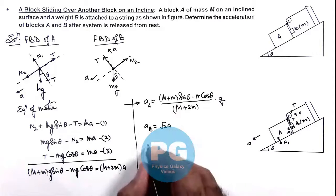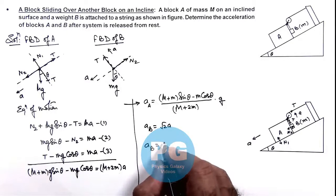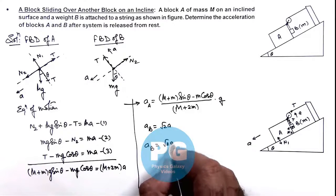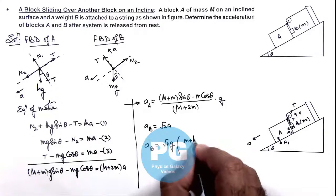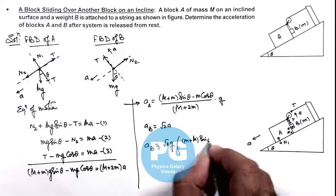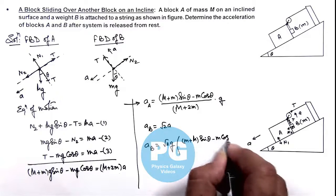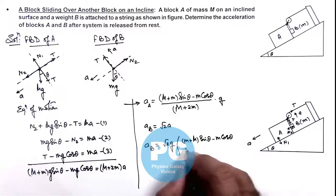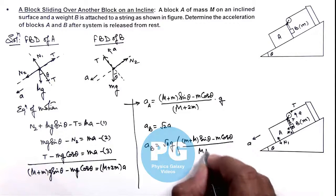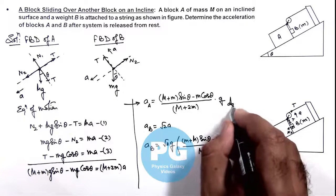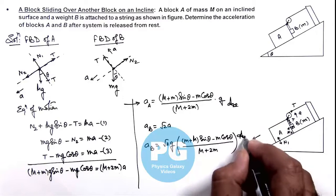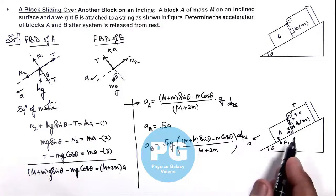Substituting the value of ay, the acceleration of block B is: root 2 times g, multiplied by (M + m) sine theta minus m cosine theta, divided by (M + 2m). These are the final results for the accelerations of blocks A and B.